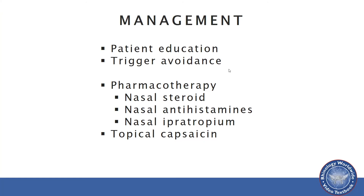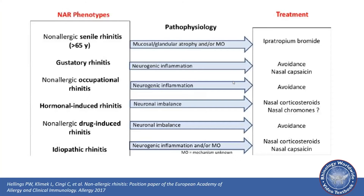Pharmacotherapy includes topical nasal steroids, antihistamines, and anticholinergics. In a diagram from the European Academy of Allergy and Clinical Immunology, this is nicely broken down — looking at senile rhinitis using ipratropium to treat that; gustatory and occupational rhinitis with avoidance; hormone-induced rhinitis which can be improved with nasal steroids; and drug-induced rhinitis which can be improved with avoidance. At the bottom, idiopathic rhinitis and nasal corticosteroids and capsaicin are listed as potential treatments.